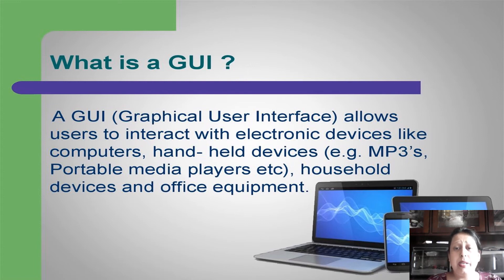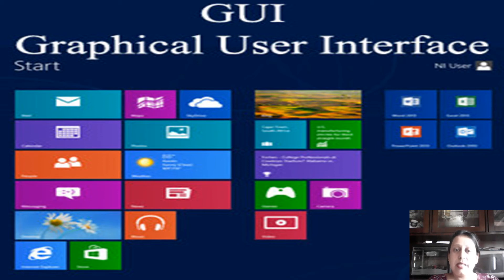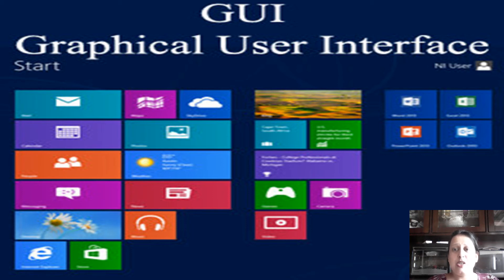Handheld, portable, household — whatever devices. Now when we open up our computer and boot it, we get this screen. I know that this envelope means there is some mail, this is a calendar, this gives me my contacts, this is my chat, this is internet connectivity, this is a gaming device. So these icons or graphics allow me as a user to access these different softwares.